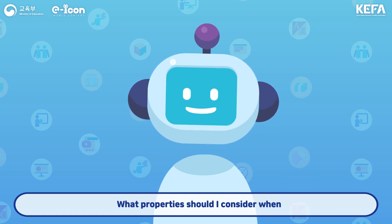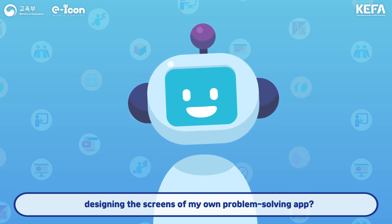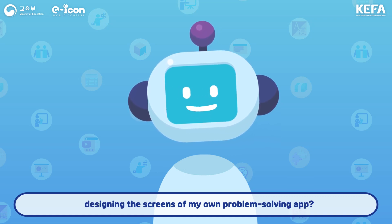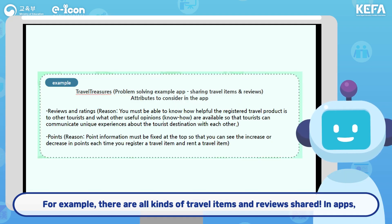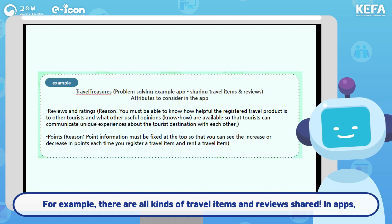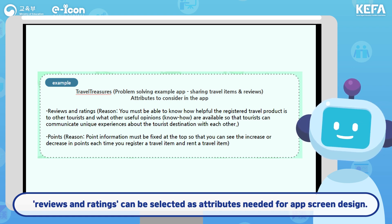What properties should I consider when designing the screens of my own problem-solving app? For example, there are all kinds of travel items and reviews shared in apps. Reviews and ratings can be selected as attributes needed for app screen design.